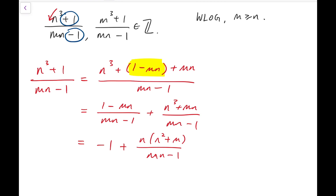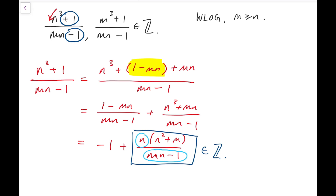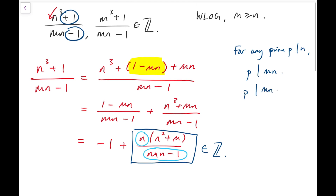Taking out the common factor between n cubed and mn, and given that the starting fraction is an integer with minus 1 taken out, what remains — n times n squared plus m over mn minus 1 — should also be an integer. Notice that n and mn minus 1 are co-prime: for any prime p dividing n, p also divides mn, but p must not divide mn minus 1. So n and mn minus 1 never share a prime factor, meaning they are co-prime.